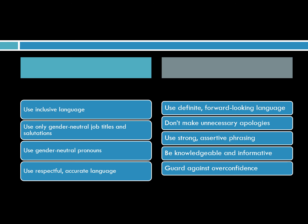Be knowledgeable and informative — know your subject, your job, and the information you're trying to get across. Use strong, assertive phrasing rather than what they call 'weasel words.' Deferential phrases such as 'I hope' and 'I trust' can sound weak and tentative. Overused phrases like 'perhaps if you have time,' 'maybe if it's not too much trouble,' or 'if you could possibly' can slowly drain the power and assertiveness from your writing. If you feel the need to use them, use them sparingly.